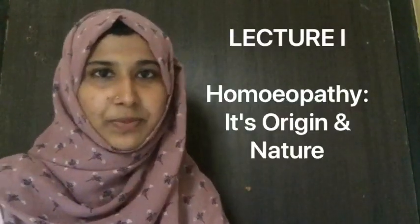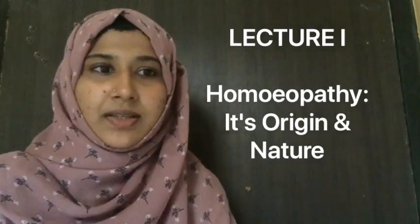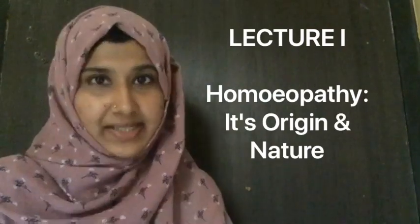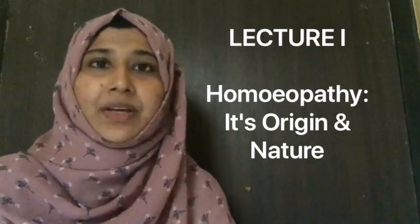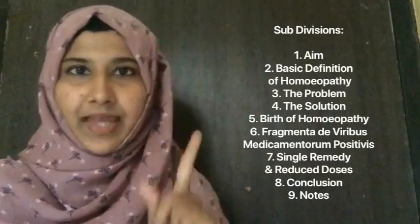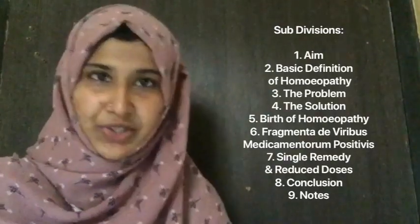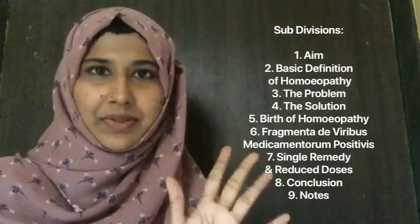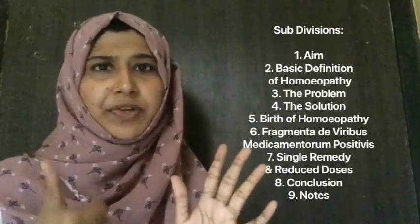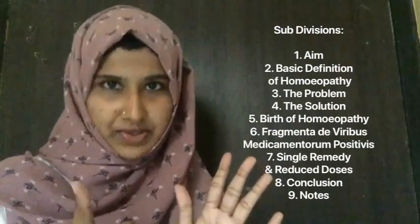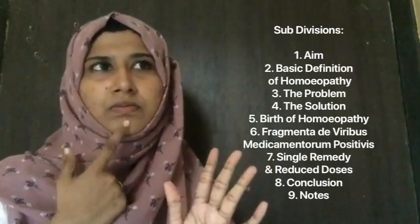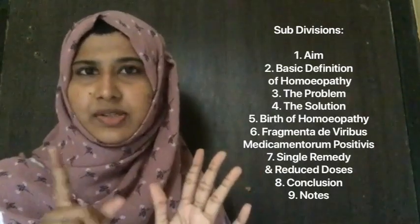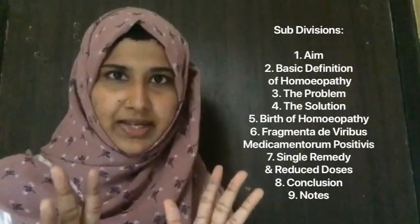Without further ado, let's start with lecture number one of The Principles and Practice of Homeopathy by Dr. Richard Hughes. This lecture talks about homeopathy, its nature and origin. For our convenience, we can subdivide the lecture into the following nine points: first is the aim; second, basic definition of homeopathy; third, the problem; fourth, the solution; fifth, birth of homeopathy; sixth, the creation of Fragmenta A Viribus Medicamentorum Positivis; seventh, single remedy and reduced doses; eighth, conclusions; and ninth, notes to lecture one.